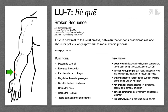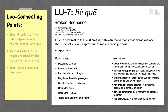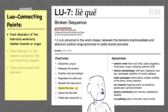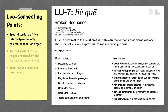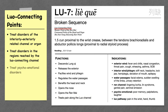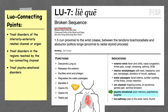Lung 7 is a luo connecting point, and this gives it some very interesting features. Luo connecting points treat disorders of the yin-yang paired channel — here Lung 7 opens the nose to treat nasal congestion and sneezing. The lung channel itself doesn't go to the nose, only to the throat, but its yin-yang pair, the large intestine channel, does go to the nose, so that's why Lung 7, the luo point, can treat nasal congestion. Luo connecting points also treat disorders along the pathway of the luo connecting channel — we see pain in the wrist, thenar eminence, and thumb. And luo connecting points treat psycho-emotional disorders — here we see poor memory, palpitations, and laughter, again highlighting the connection between the lung and the heart.